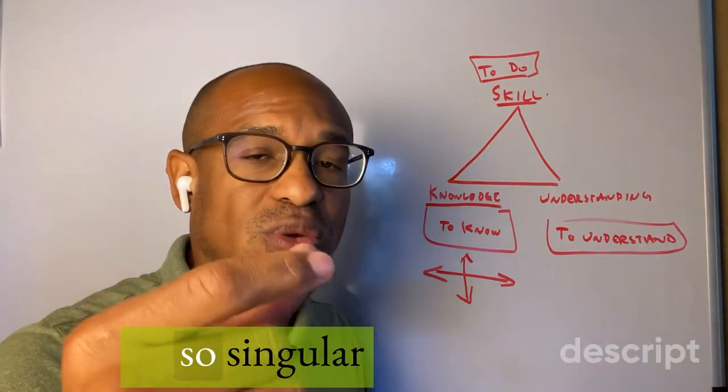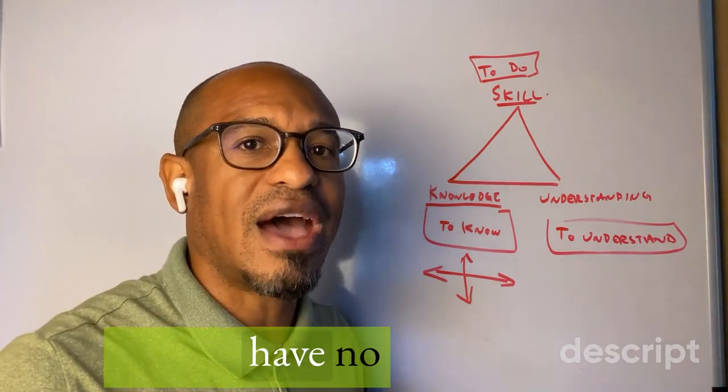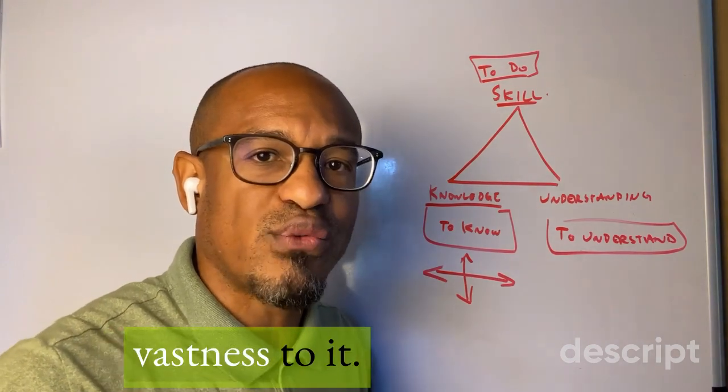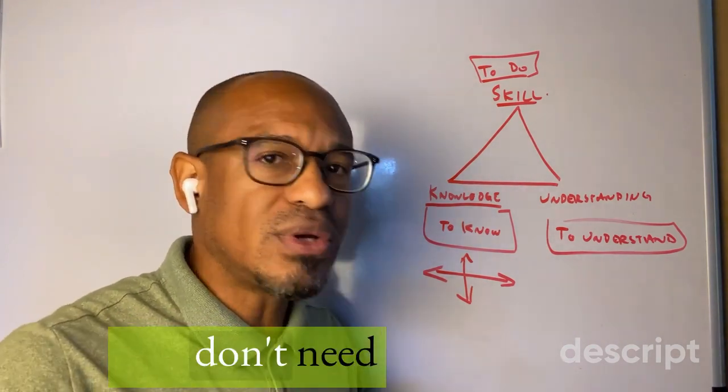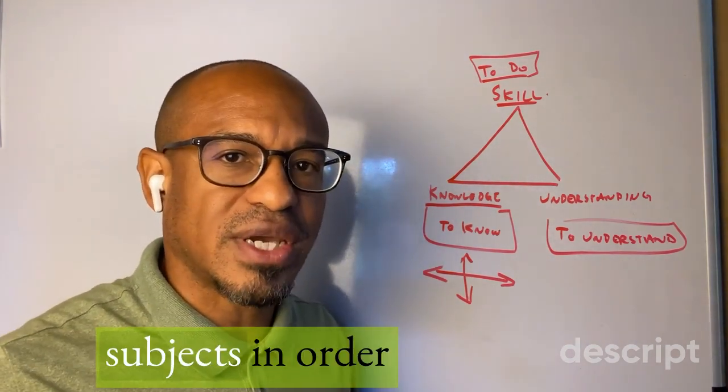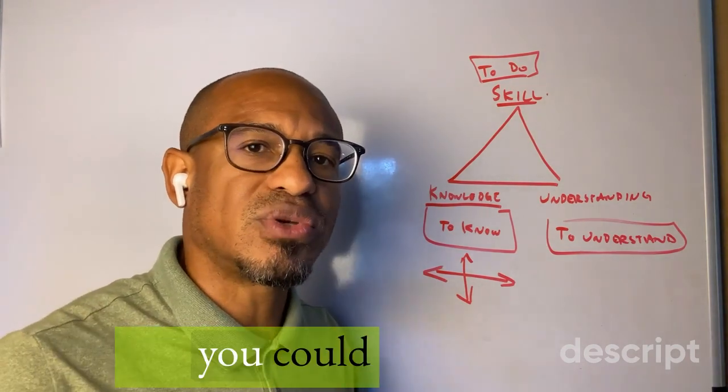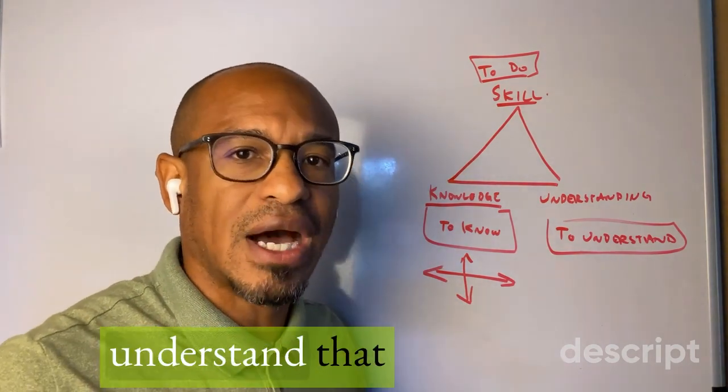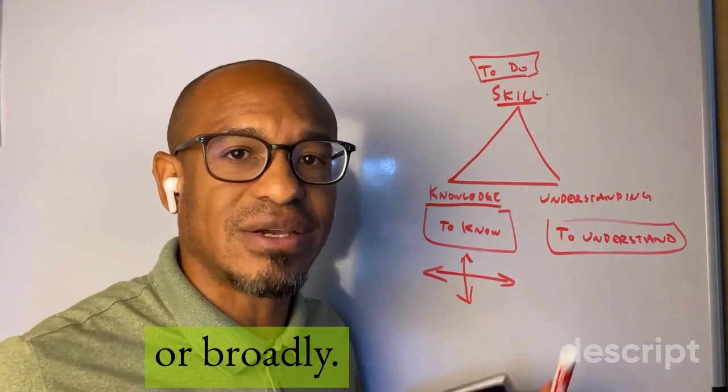You and I can't be so singular in our thinking that we have no broadness or no vastness to it. You don't need to understand 15 different subjects in order to have vastness, but you could take one subject and understand that subject vastly or broadly.